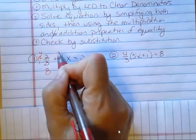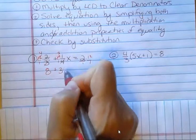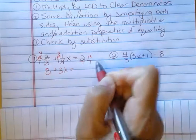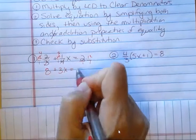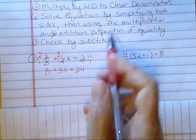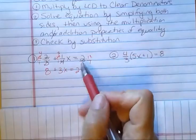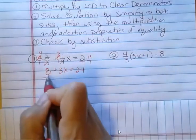4 goes into 12 3 times. 3 times 1 is 3. I have the x there. And then 2 times 12 is 24.